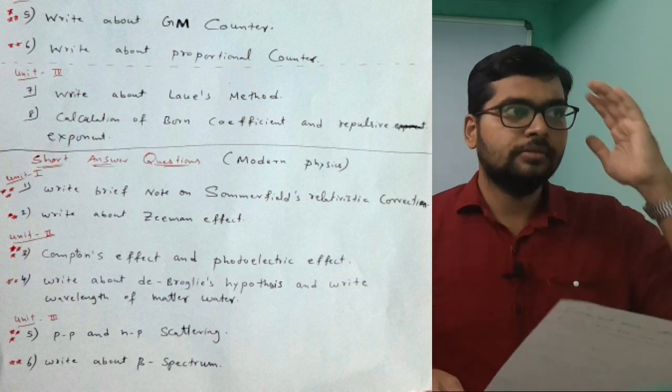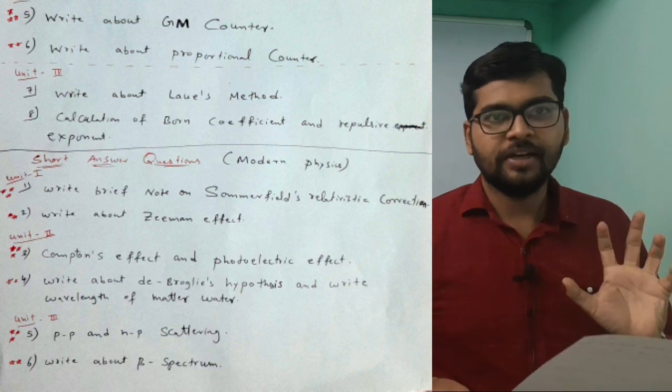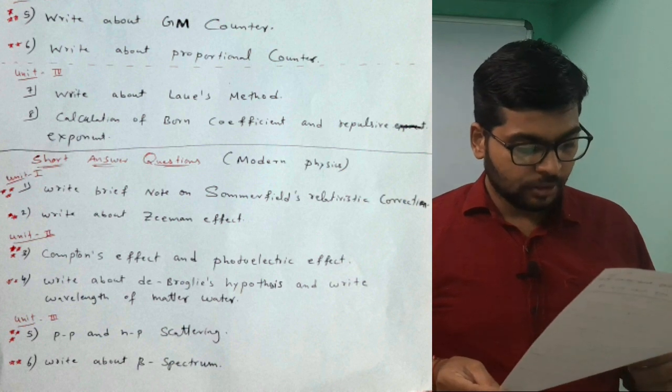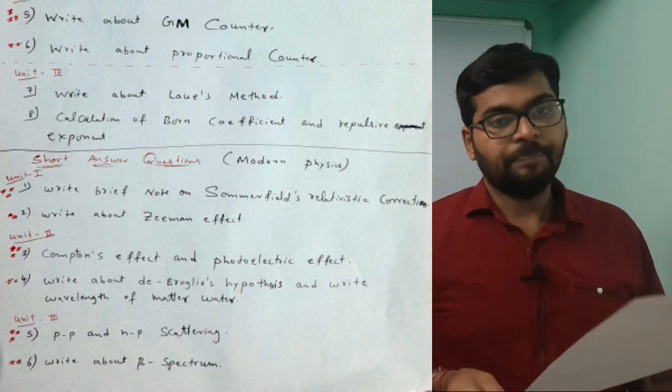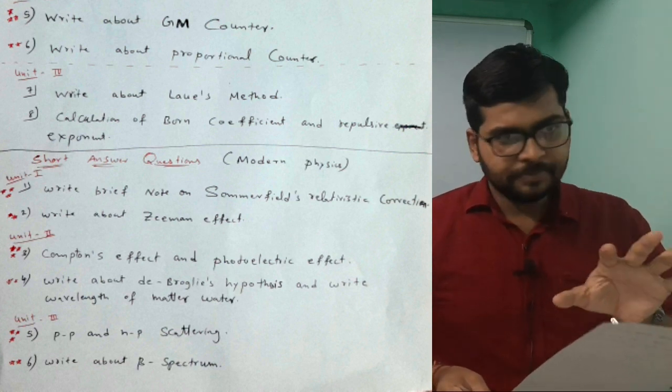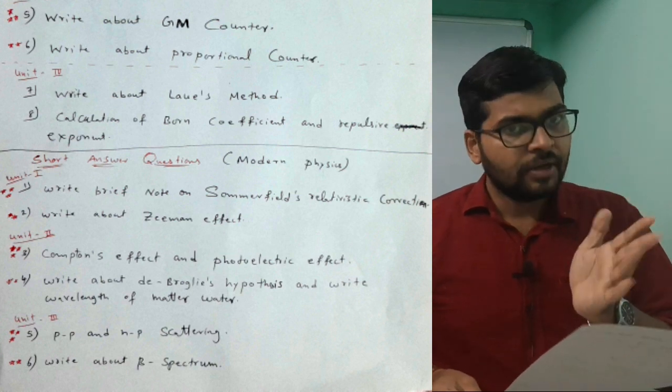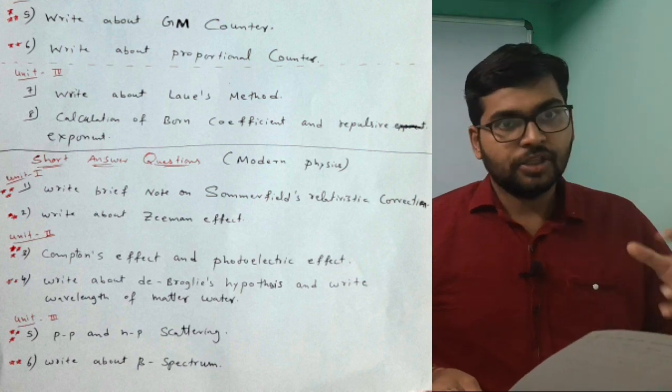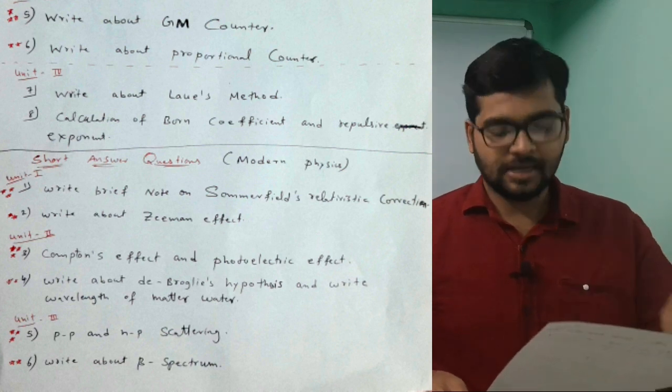Fourth question: write about de Broglie hypothesis and write wavelength of the matter wave. What de Broglie told - first briefly study, then you'll have equation for wavelength of matter wave, h by p. Then detailed explanation about that one. First thoroughly understand, then read, then write with your own words.